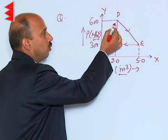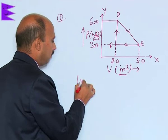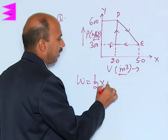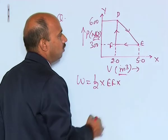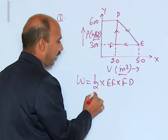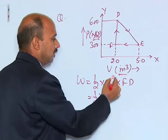Now I have to calculate the work done from D to E and E to F. Work done is equal to half into base into height. So EF into FD, and EF is 5 minus 2, that is 3 meter cube.